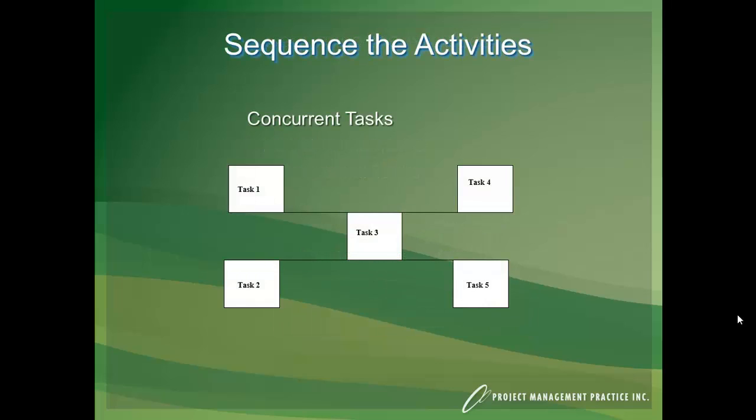Here we have some concurrent tasks, where task 1 and 2 can happen at the same time. Notice there's actually no link between them, and so in this case they'll be driven by the project start date. They'll both have to be done before task 3 can start, so obviously the longer one of those tasks will be on the critical path.